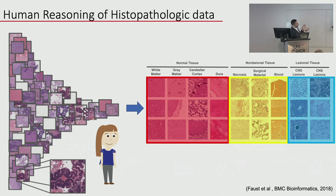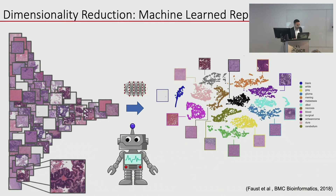Knowing how the data should be structured by a trained human, we can train a neural network supervised, teach it these different classes, and then see how it organizes the data using clustering techniques. We take a trained neural network, run the images through, and instead of classifying, we use the learned representations deep in the network — the high-level features — and visualize how they're organized in a two-dimensional grid. Groups closer together probably share similar tissue patterns.